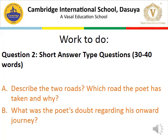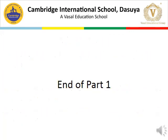Now let us have short answer type questions, which you have to answer in 30 to 40 words. My first question is: Describe the two roads. Which road did the poet take and why? My second question is: What was the poet's doubt regarding his onward journey? This is the end of part one.